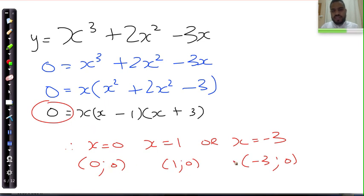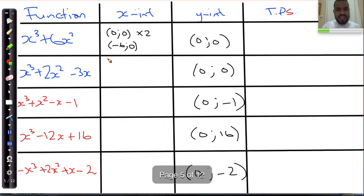(0,0), (1,0), (-3,0). Now I'm going to add that over here. 0, 0; 1 and 0; and then the final intercept is -3 and 0.